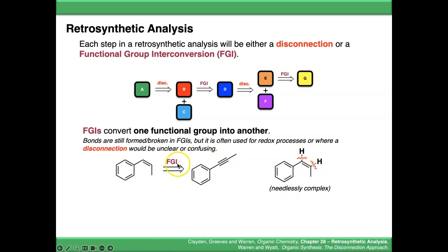It's needlessly complex. This is a redox process, so we can say it's a functional group interconversion. We're reducing this alkyne to this alkene.